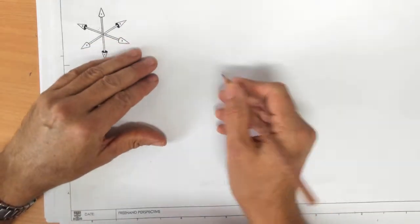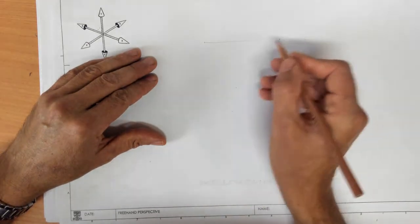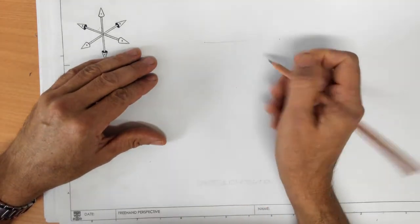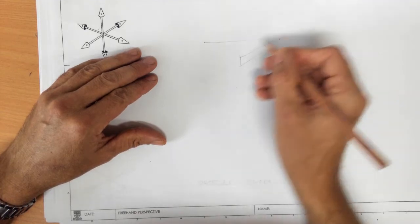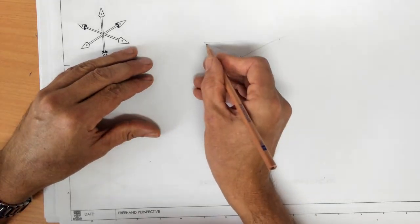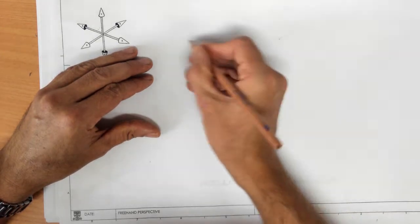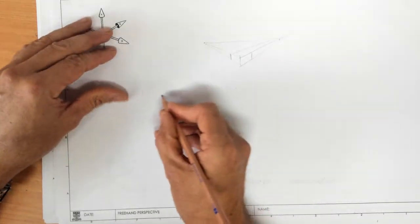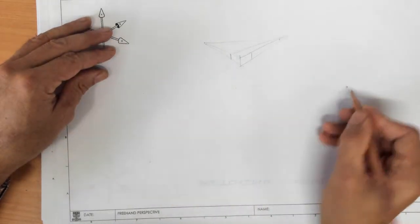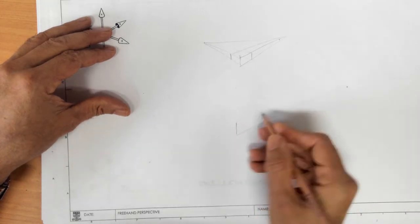Because inevitably what happens is we get distortion occurring because of vanishing points that are too close together. So when I draw my little object there, what we do is end up with this gross convergence. So these lines here end up being very, very triangular. As we put our vanishing points further apart, the convergence becomes softer.